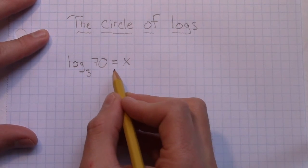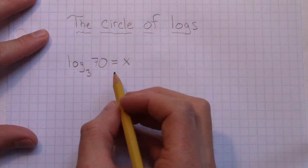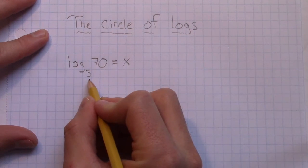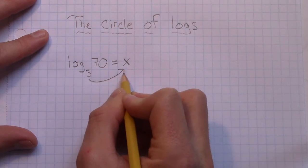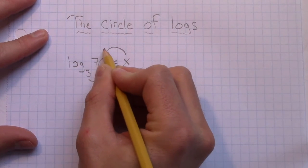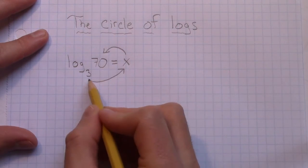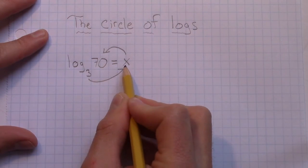So if I wanted to convert this into an exponential function, this is how I would do it. I would look at the base first. So the base is right here, this smaller one. And then I kind of draw this circle with arrows. All right, so this is where the circle part comes from. It kind of goes like this. So 3 to the power of x equals 70.